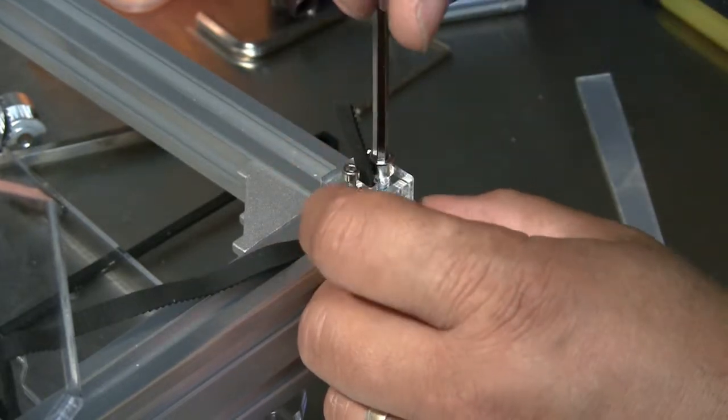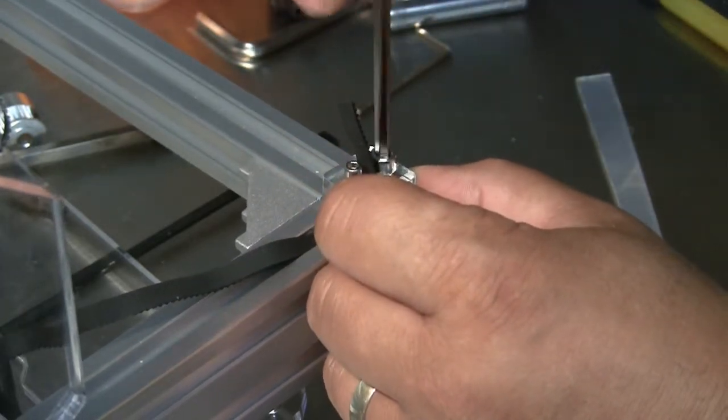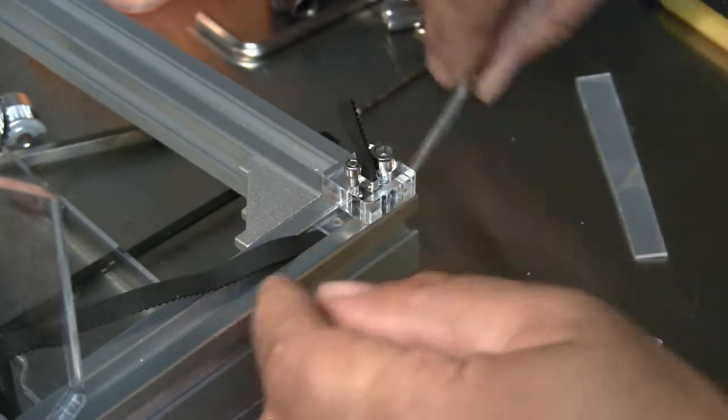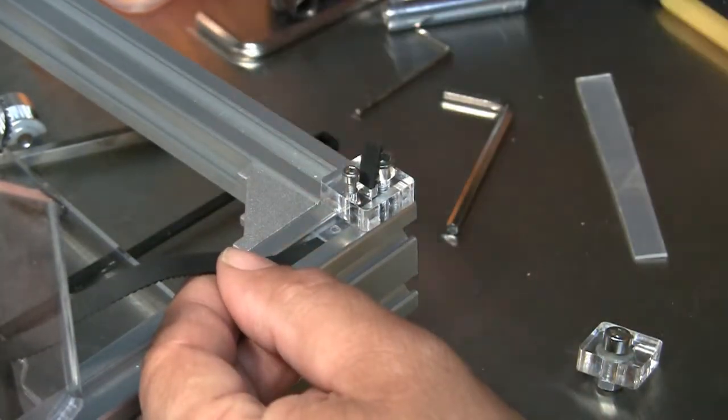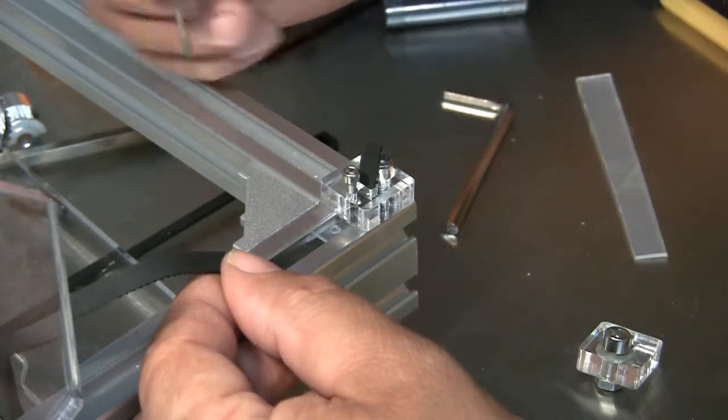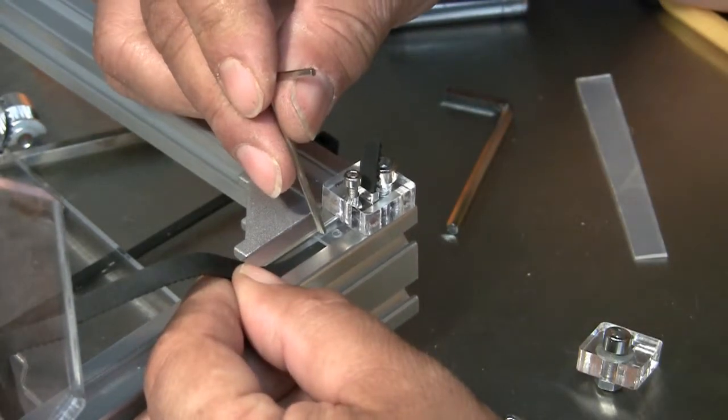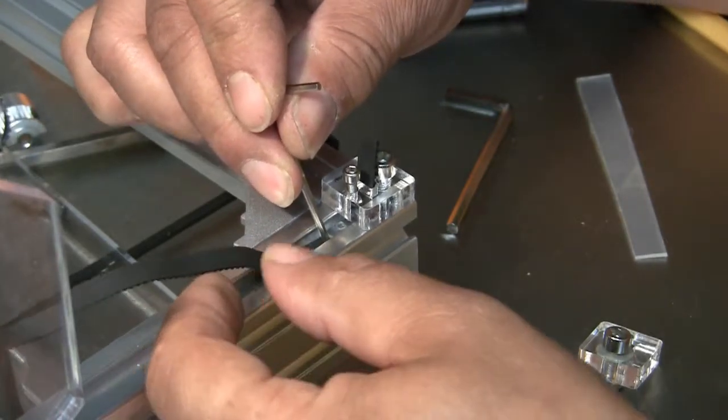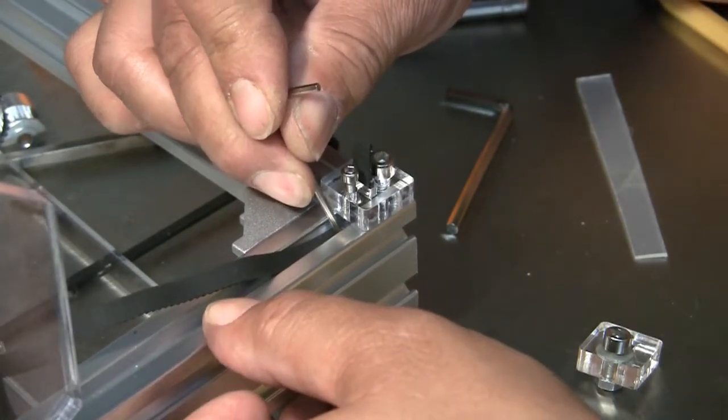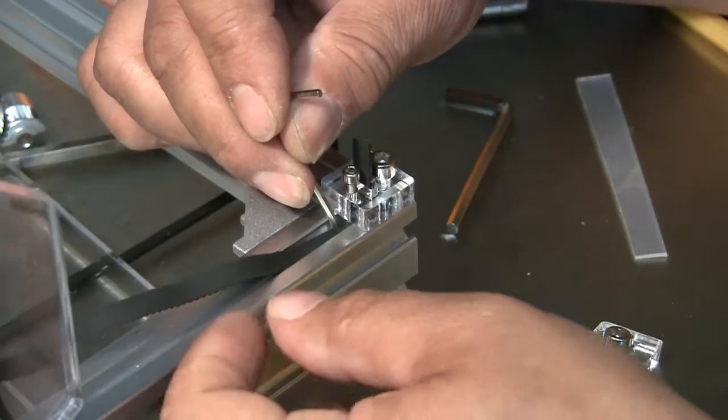I just snug it, just enough for it to tighten, not too much. And with this piece here, what I do is, as you can see, the little plastic piece is sitting right here, and I push this underneath this screw, which is loosened.